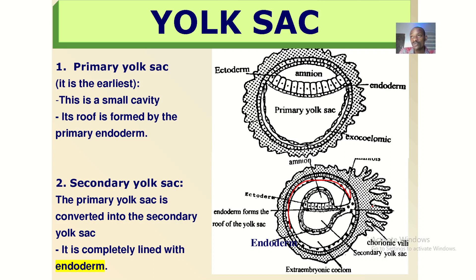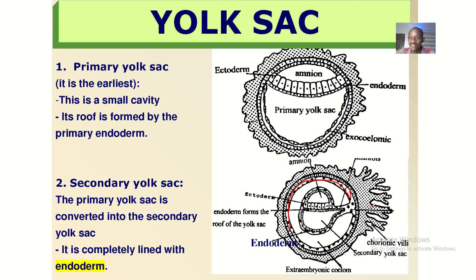When we talk about the secondary yolk sac, or the definitive yolk sac, the extraembryonic mesodermal cells migrate to the space and push the primary yolk sac away, and this becomes the secondary yolk sac. So it's all about: you form, I replace you, and someone else comes to replace me.